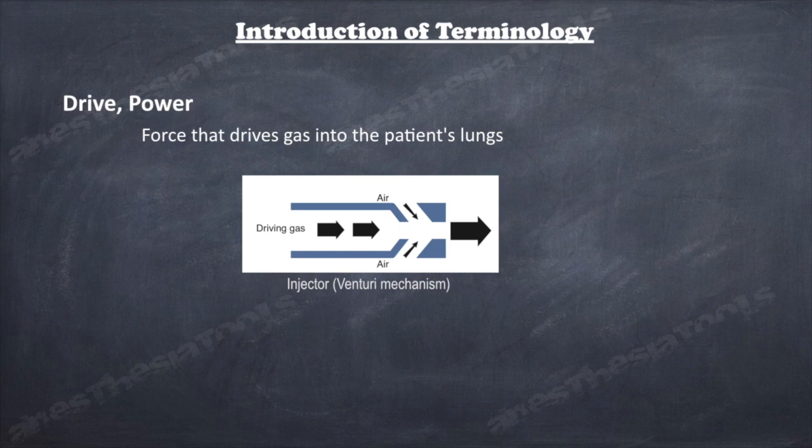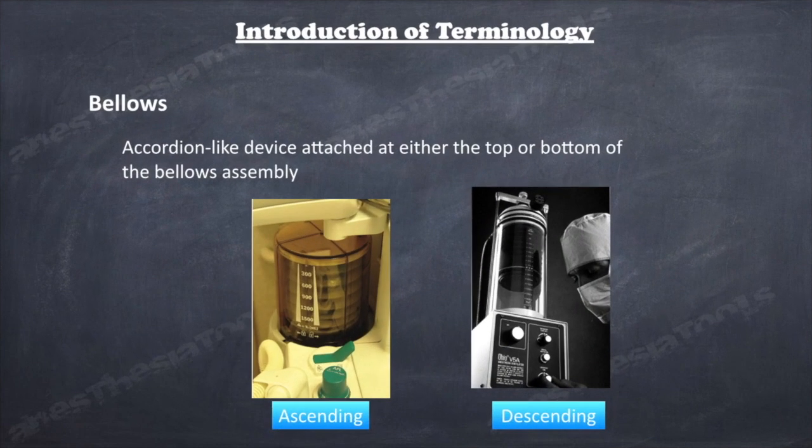Some ventilators use a device called an injector using Venturi mechanism to increase the driving gas flow. Some newer ventilators use electricity exclusively. The bellows is an accordion-like device attached at either the top or bottom of the bellows assembly. Latex-free bellows are available.